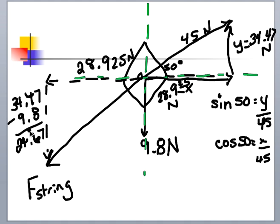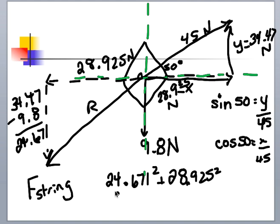Now that I have my x and my y component, I can find the resultant with my Pythagorean theorem. 24.671 squared plus 28.925 squared, and then square root. I get a force on the string of 38.01, two sig figs takes me to 38 newtons.